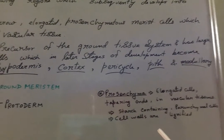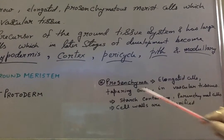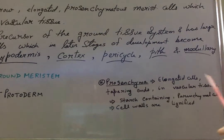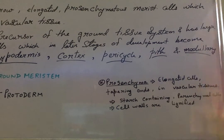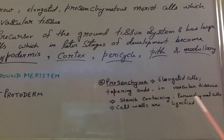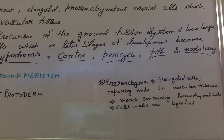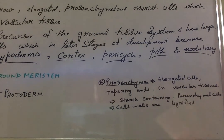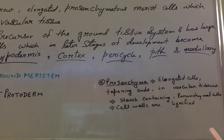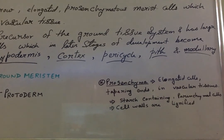Prosenchyma consists of elongated cells with tapering ends, found in vascular tissues. Prosenchyma contains parenchymatous cells, and the cell walls are lignified due to the deposition of lignin. These are some key points regarding prosenchyma, and this topic is continued in the next video.